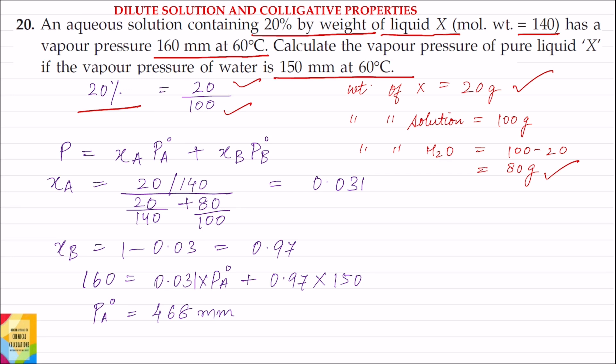Now we know the weight of solute and weight of solvent. The pressure of the solution equals the mole fraction of solute X_A into vapor pressure of the pure solute, plus the mole fraction of water X_B into vapor pressure of pure water P0_B. P0_A denotes the vapor pressure of pure liquid X.